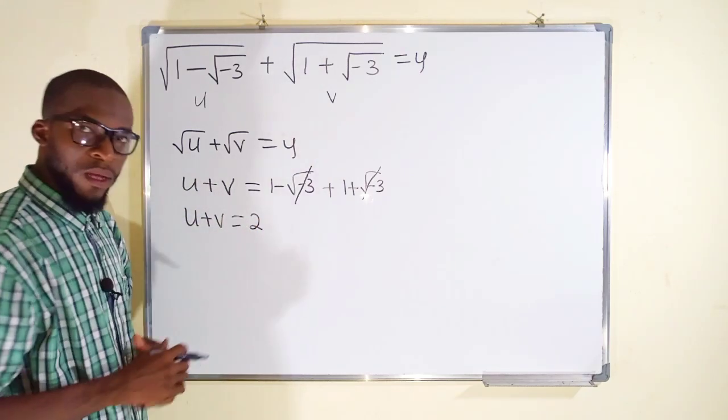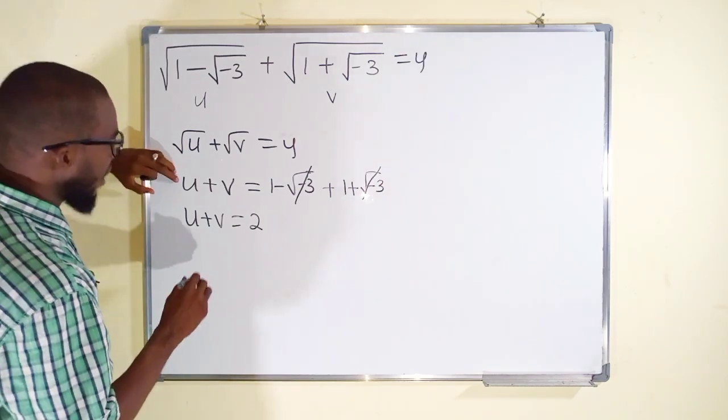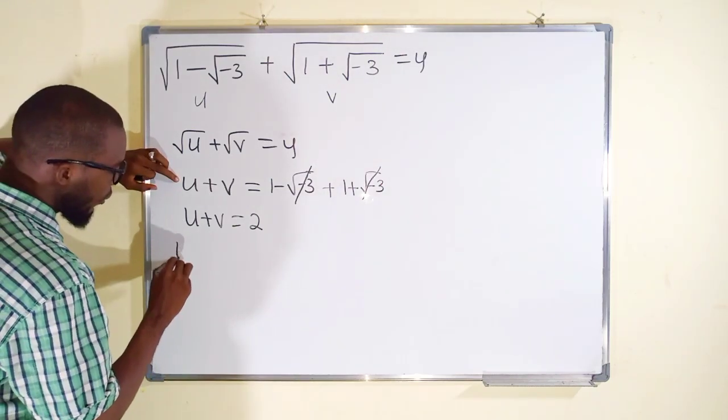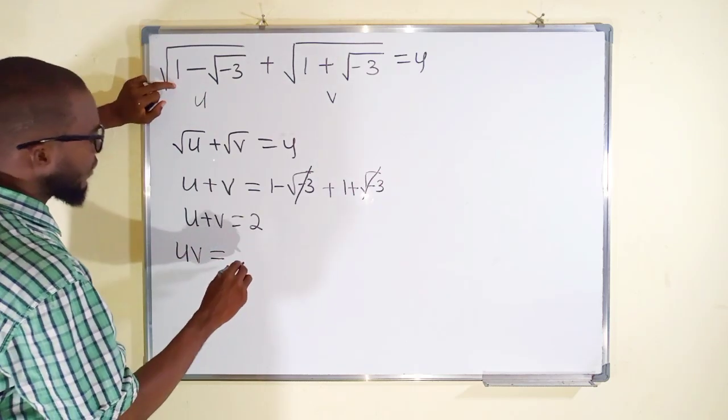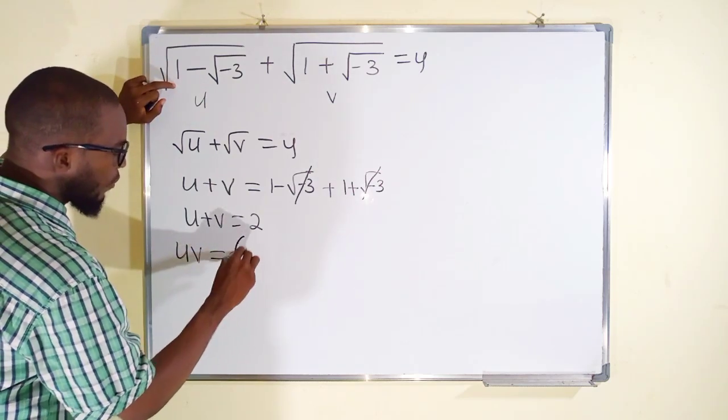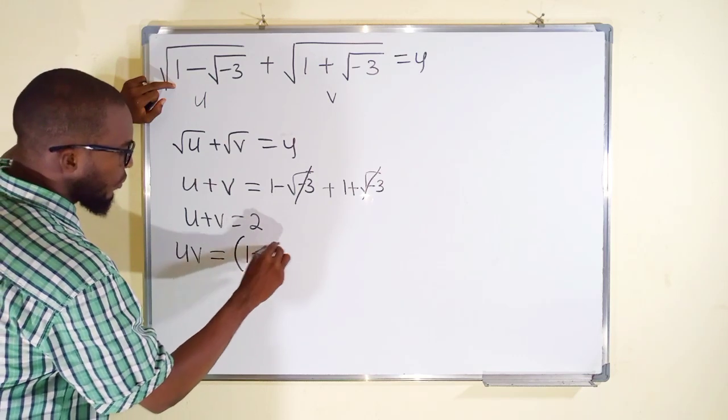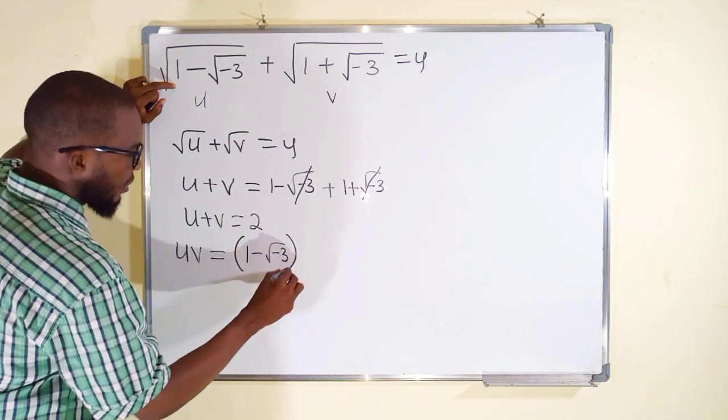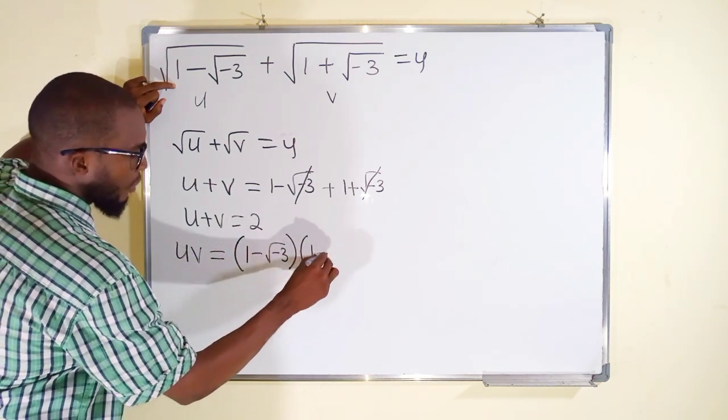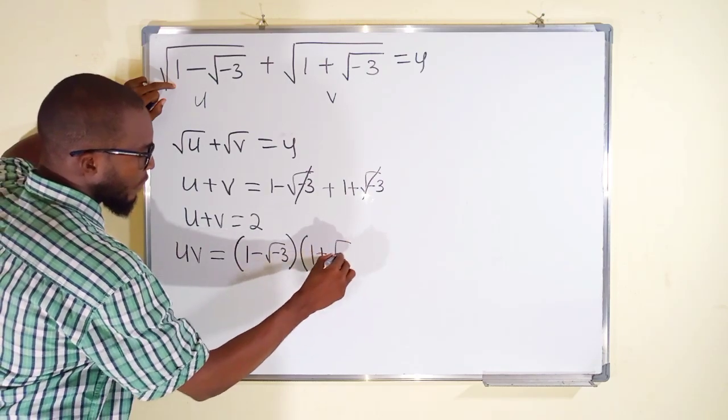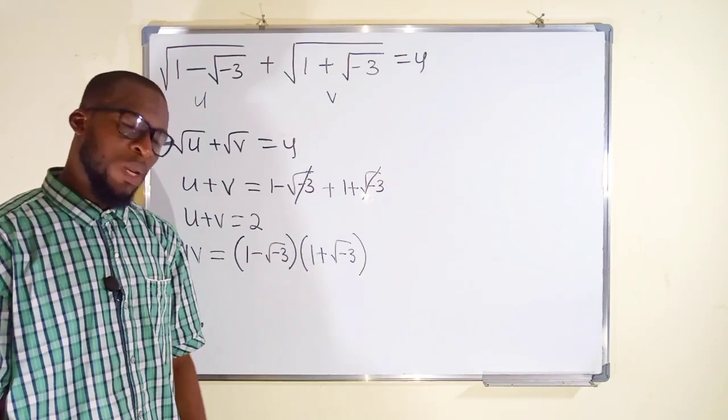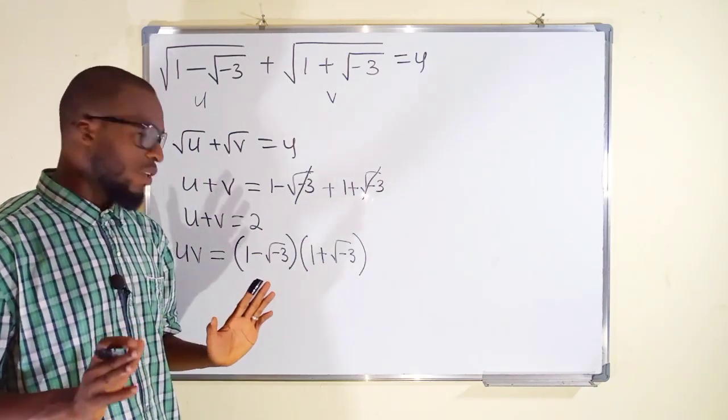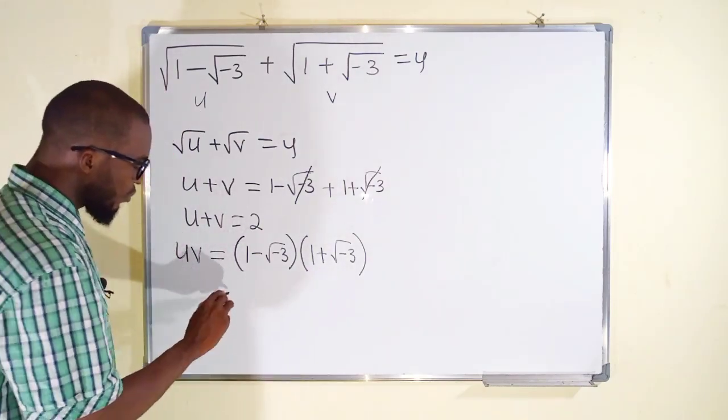Secondly, I want us to find uv. So we are going to take this and multiply them together: (1 - √(-3)) × (1 + √(-3)). Look at them very carefully, they are just difference of two squares. If they are difference of two squares, you take the first term, square it, subtract, take the second term and also square it.